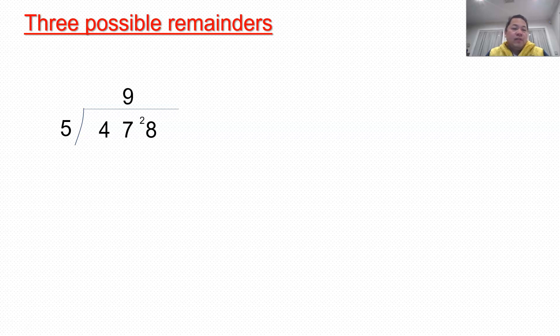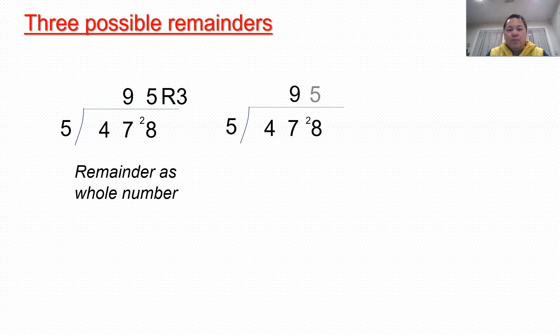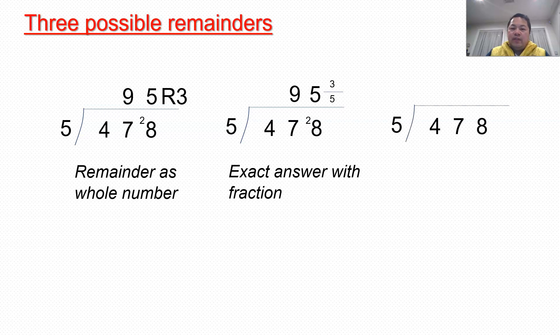But when there is a need for us to have a remainder, there are three possibilities. First one, 47 divided by 5 is 45, which is 9, and then remainder 2. This is an outright remainder question, remainder as a whole number. Next one, what about 478 divided by 5? You work it out, and now, because we have a remainder of 3, we can also put it as 3 out of 5. 3 is the remainder, 5 is the divisor. That's why it's 3 fifth. So exact answer, this is actually an exact answer with a fraction, 95 and 3 fifth. So what about the last one? 470 divided by 5 again. I have a remainder of 3. So what do I do? I continue dividing. I'll get a 0.6 as the answer at the end. So it's 95.6. And this is an exact answer with decimal.